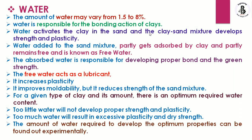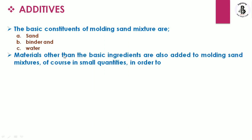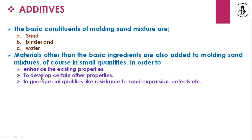Additives are also added to the molding sand mixture in small quantities to enhance existing properties, develop certain other properties, and give special qualities such as resistance to sand expansion defects. The three basic constituents of molding sand are sand, binders, and water.